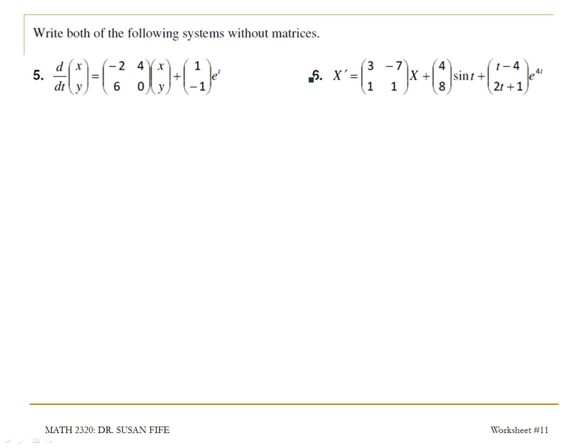In number 5 and number 6, we're taking the matrix form of the answer and rewriting it as a system without matrices.